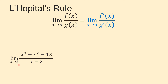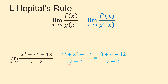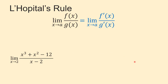To find this limit, first we plug in 2 for x. We get (2³ + 2² − 12) over (2 − 2). 2³ is 8, 2² is 4, so in the numerator we have 8 + 4 − 12 = 0, and in the denominator we have 2 − 2 = 0. Because we get 0/0, we can apply L'Hôpital's rule.